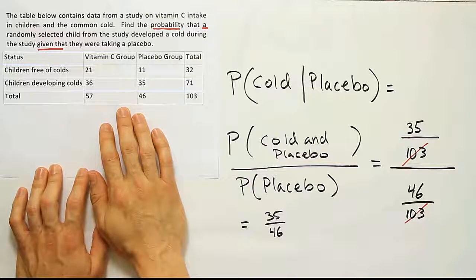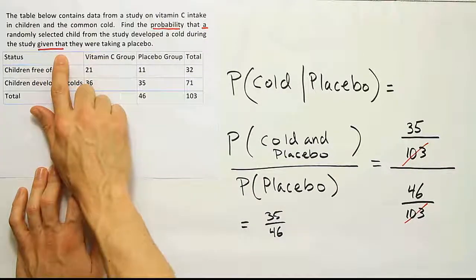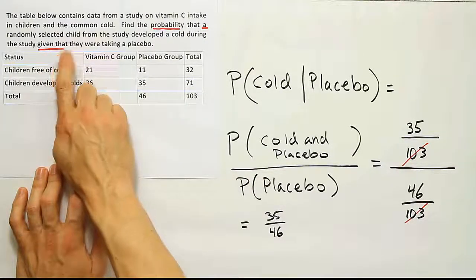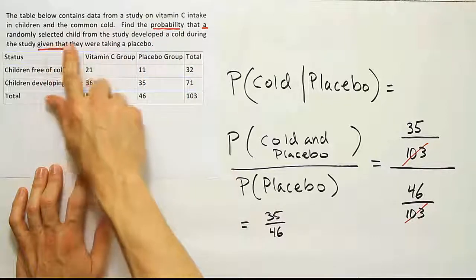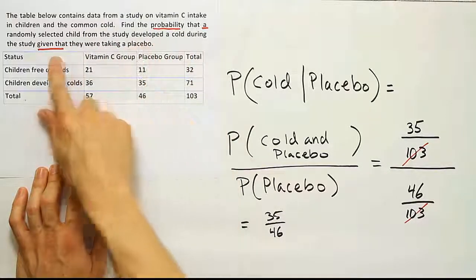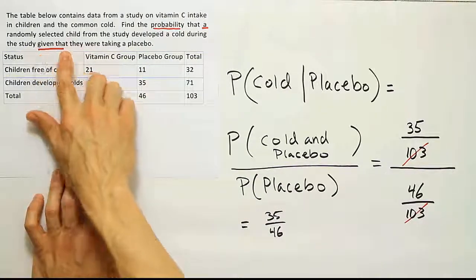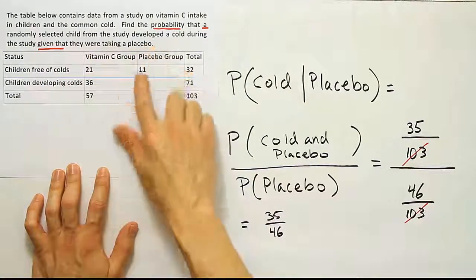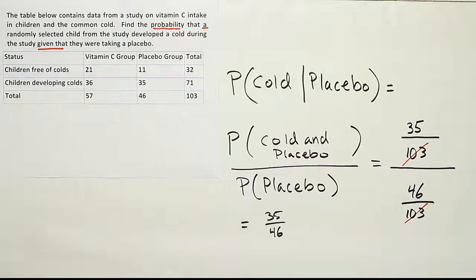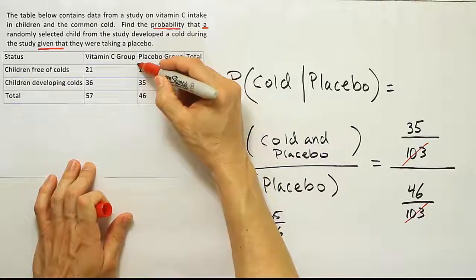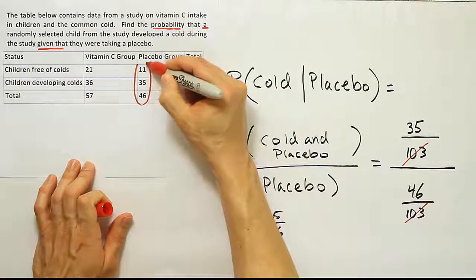The approach when you have a table is to use this given that condition to your advantage. So it says, find the probability that a randomly selected child from the study develops a cold given that they were taking a placebo. So what we want to do is focus our attention only on what follows this phrase given that. That's it. Only look at that category. For us, that category is the placebo group. So I'm going to circle that category.